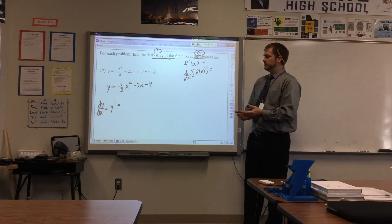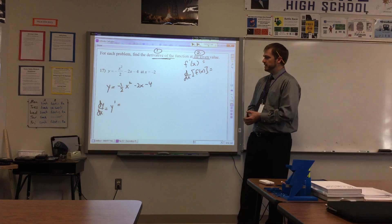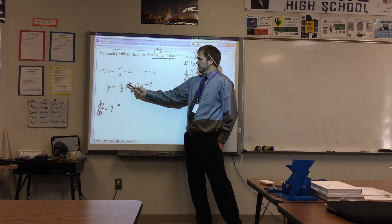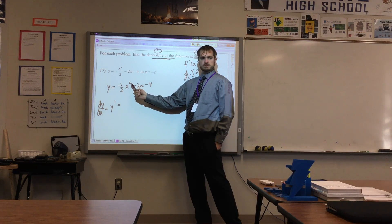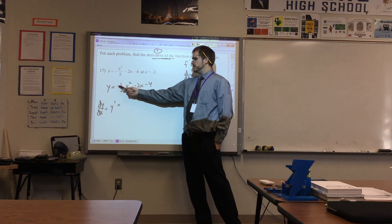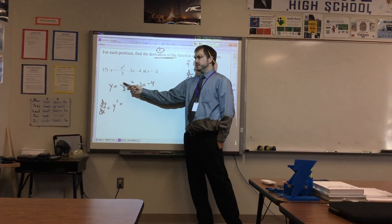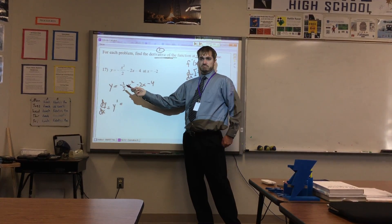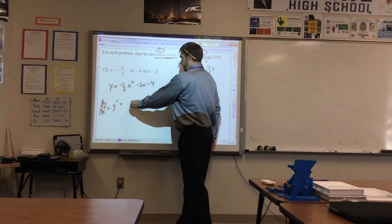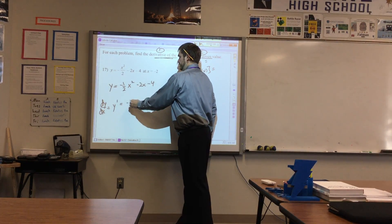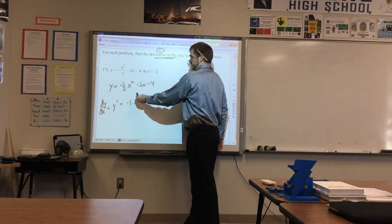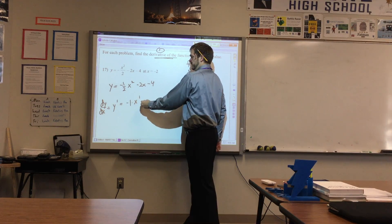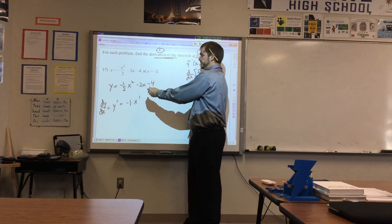First let us find the derivative. This is a good warm-up for a Monday. We've rewritten it so that we have the multiple out here, so remember your power rule — pop down the exponent. Two times negative one-half is negative one. So negative one times x, then power down — decrease the exponent by one, so two turns into a one. Negative two x.